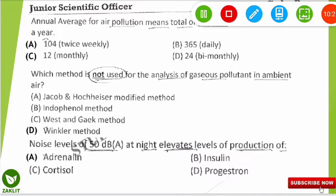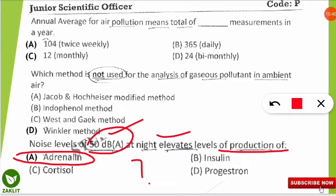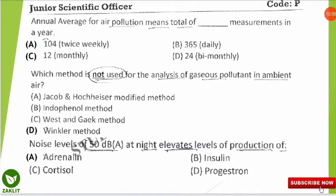The next question: a noise level of 50 decibels at night elevates which hormone in our body? The correct option is E — adrenaline. Adrenaline levels rise when we are subjected to higher noise levels. Insulin, progesterone, and cortisol are not associated, but adrenaline is the hormone elevated by higher noise levels.